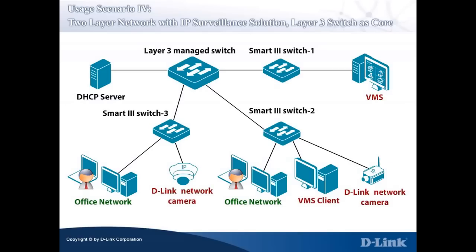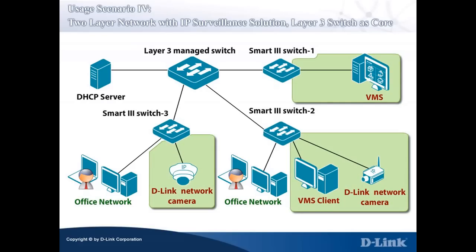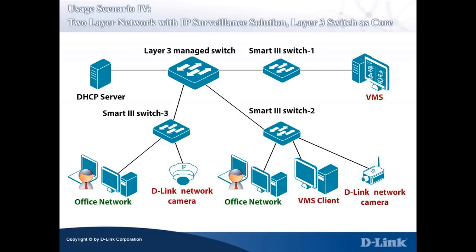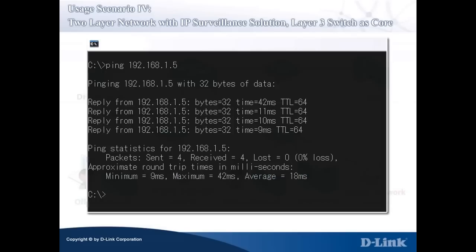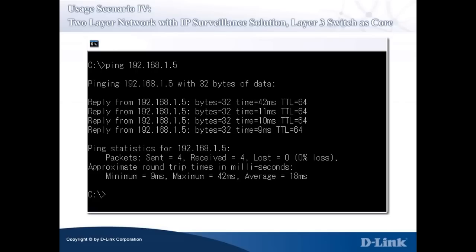After the configuration is done, the network cameras, the VMS Server, and the VMS Client are recognized by the Smart 3 Switch automatically and will be put in the Auto Surveillance VLAN. Network traffic coming from those devices will have the priority value set to High. To verify the configuration, first verify the network connectivity of each component by using the ping command. Here we test it from the VMS Server to the VMS Client as an example. Bring up the Windows command prompt and issue a ping to the destination hosts. If you see a reply from the destination IP address — here 192.168.1.5 — the network connection is fine. Otherwise, you have to troubleshoot network connection issues and consult your D-Link representative for help.